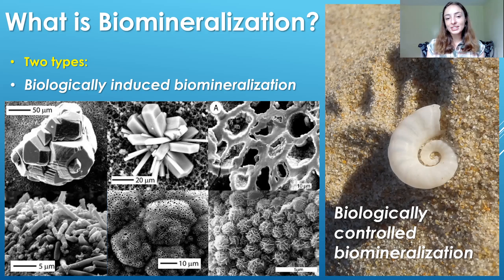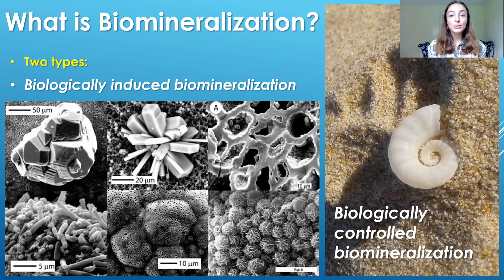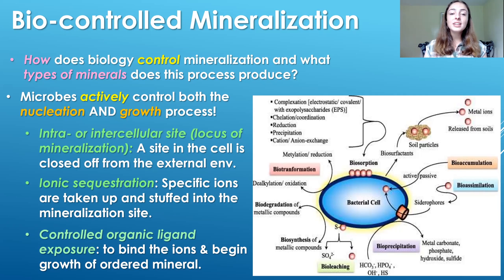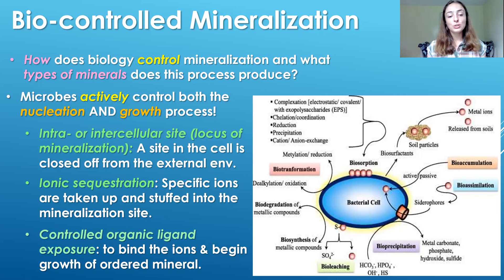Just to recap the first biomineralization video: there are two main types of biomineralization — biologically induced mineralization and biologically controlled mineralization. In parts two and three we talked about biologically induced biomineralization. In parts four and five we're talking about biologically controlled mineralization, a process in which microbes actively control both the nucleation and growth of mineralization. They typically have an intra- or intercellular locus of mineralization, sequester ions into this site, and expose those ions to organic ligands in a controlled manner to begin nucleation and grow crystals at a certain orientation and structure.